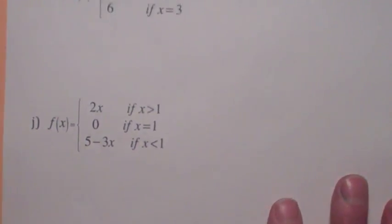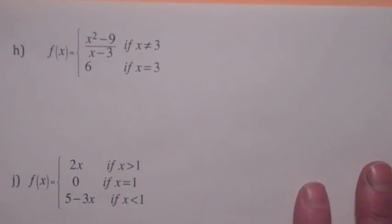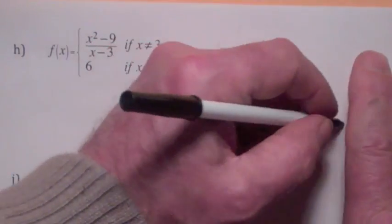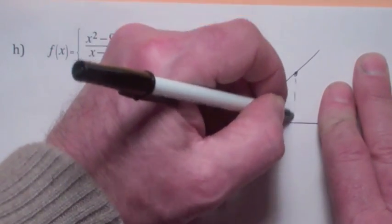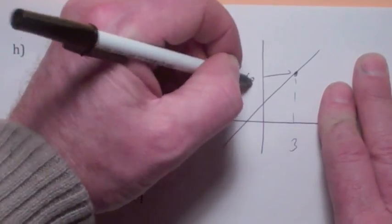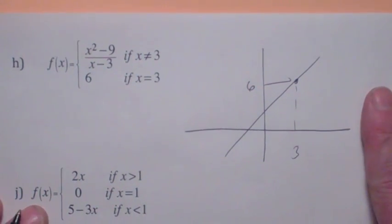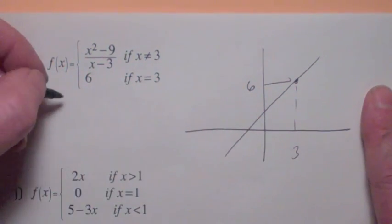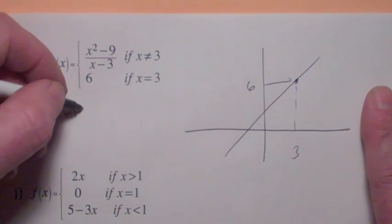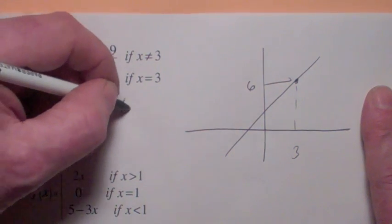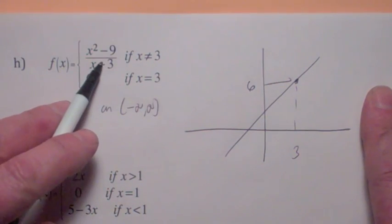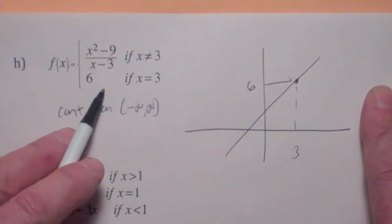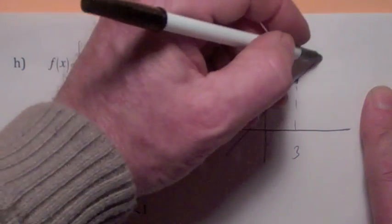Here's the same function again but now we define it to be 6 at x equals 3. So the graph looks the same, and at x equals 3 we actually define it to be 6. Notice this is continuous at every point — negative infinity to infinity. The only question was whether there was a hole here, and didn't we fill it in perfectly by defining it to be 6 there? So it's continuous everywhere.